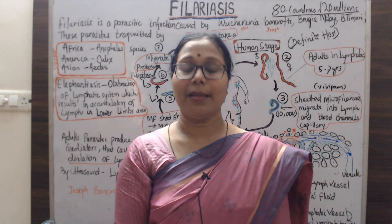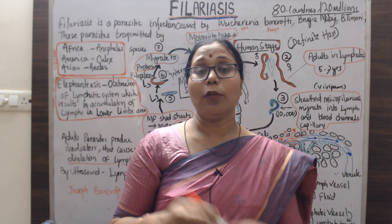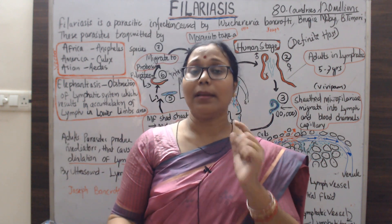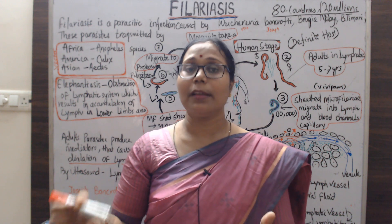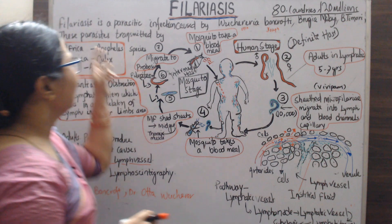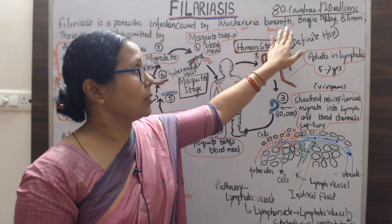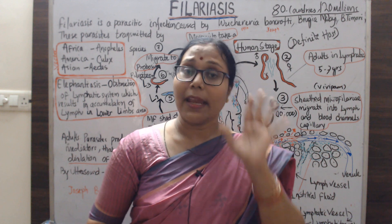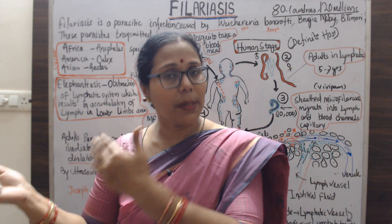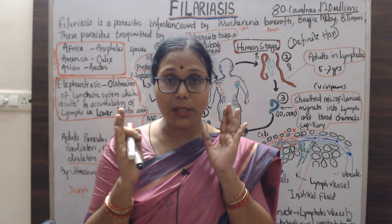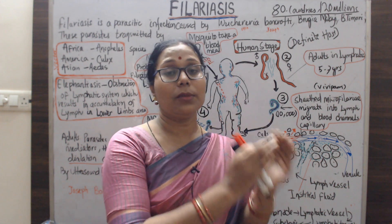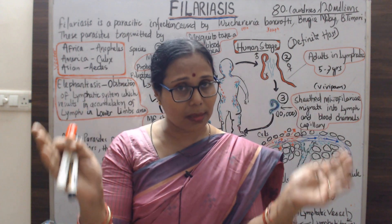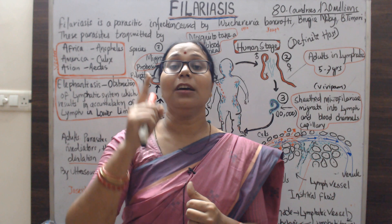Welcome to this lecture on filariasis. Filariasis, or elephantiasis, refers to infections or dysfunctions of the lymphatic system. It is a parasitic infection caused by Wuchereria bancrofti, Brugia malayi, and Brugia timori. This is not only a problem in India — 80 countries are affected, with about 120 million people infected. Wuchereria bancrofti causes 90 percent of filariasis cases.